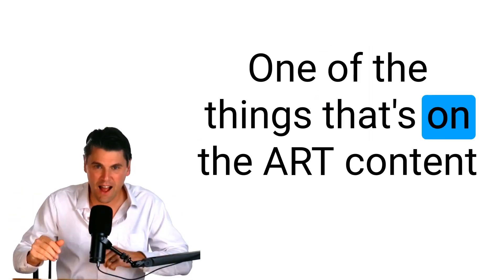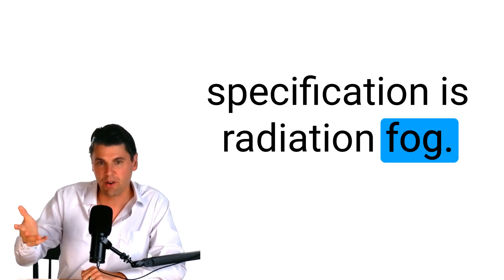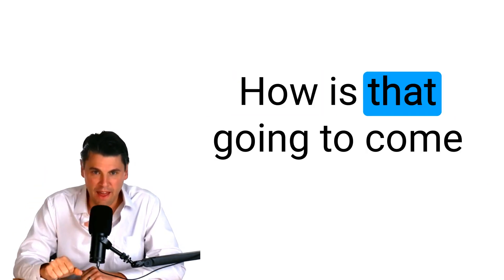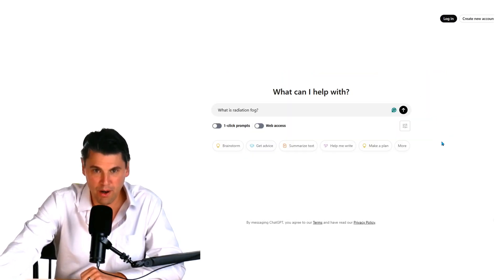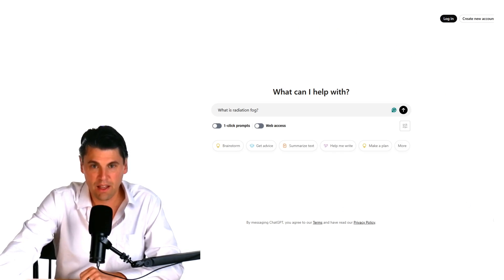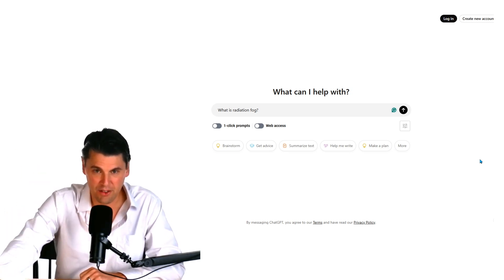One of the things that's on the ARRT content specification is radiation fog. How is that going to come up if we ask ChatGPT? Let's start with a simple query on ChatGPT. Right here, we're at model 4-0-mini. This is a couple iterations in. Let's see, what does ChatGPT say?